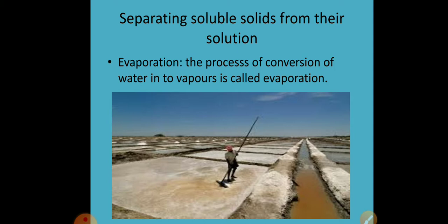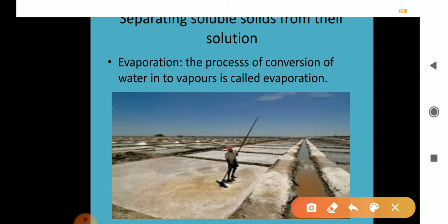Soluble solids means those which can be dissolved in liquid or water — as I told you earlier, examples are sugar and salt. For separating them, we will use the method of evaporation.